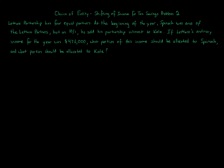Problem 2: Lettuce Partnership — choice of entity and shifting of income for tax savings. Lettuce partnership has four equal partners. At the beginning of the year, Spinach was one of the partners, but on October 1st he sold his partnership interest to Kale. The partnership is a flow-through entity, denoted with a triangle, and all four partners are equal, so Spinach owns 25%.